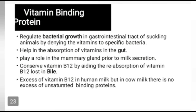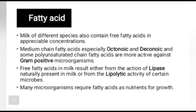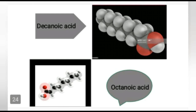There is an excess of vitamin B12 in human milk but not in cow milk; there is no excess of unsaturated binding property in cow milk. Vitamin B12 also helps prevent a type of anemia called megaloblastic anemia, which makes people tired and weak. Fatty acids: milk of different species also contains free fatty acids in appreciable concentrations, providing approximately 50 to 60 percent of energy in human milk.